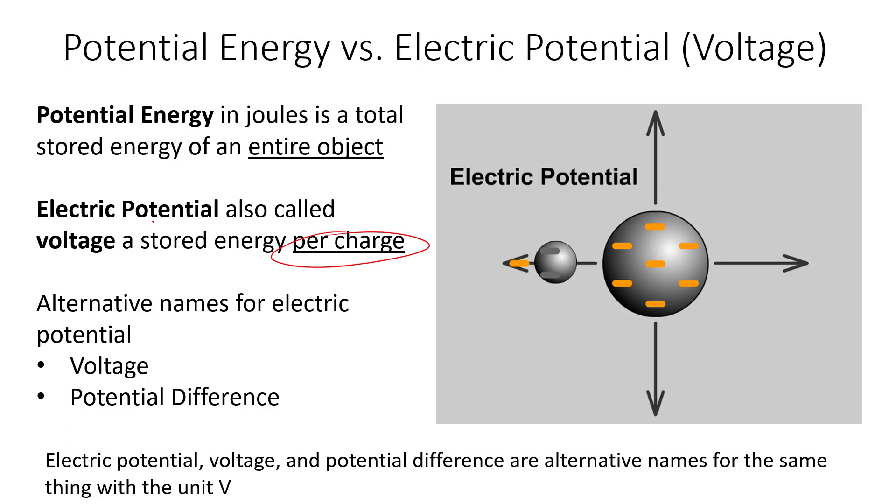The key is electric potential, or we'll see the term voltage, or potential difference—three different words to mean the exact same thing. Electric potential, voltage, or potential difference is a per charge. We're talking about one electron or one proton, a per charge desire to flow. Whereas potential energy, we're looking at joules. The unit here would be joules, the unit here is going to be volts. If you see joules, we're talking about the entire objects, the entire energy to flow away.